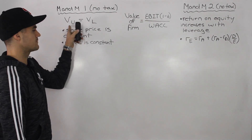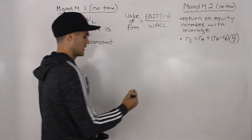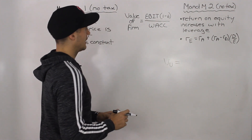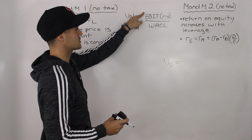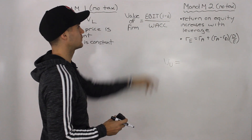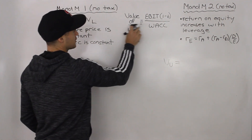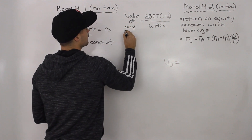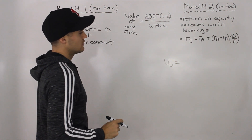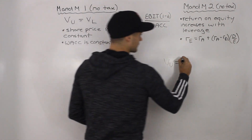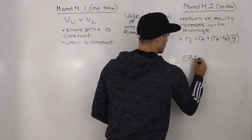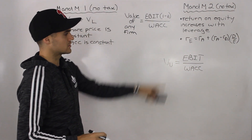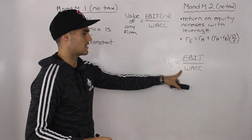The value of an unlevered firm — well, the value of any firm is its earnings before interest and taxes over the weighted average cost of capital when we're dealing with no taxes. So the value of an unlevered firm is just going to be this formula. Since we're dealing with no taxes, I'm going to leave out that (1 minus t). So the value of an unlevered firm is EBIT over the weighted average cost of capital.